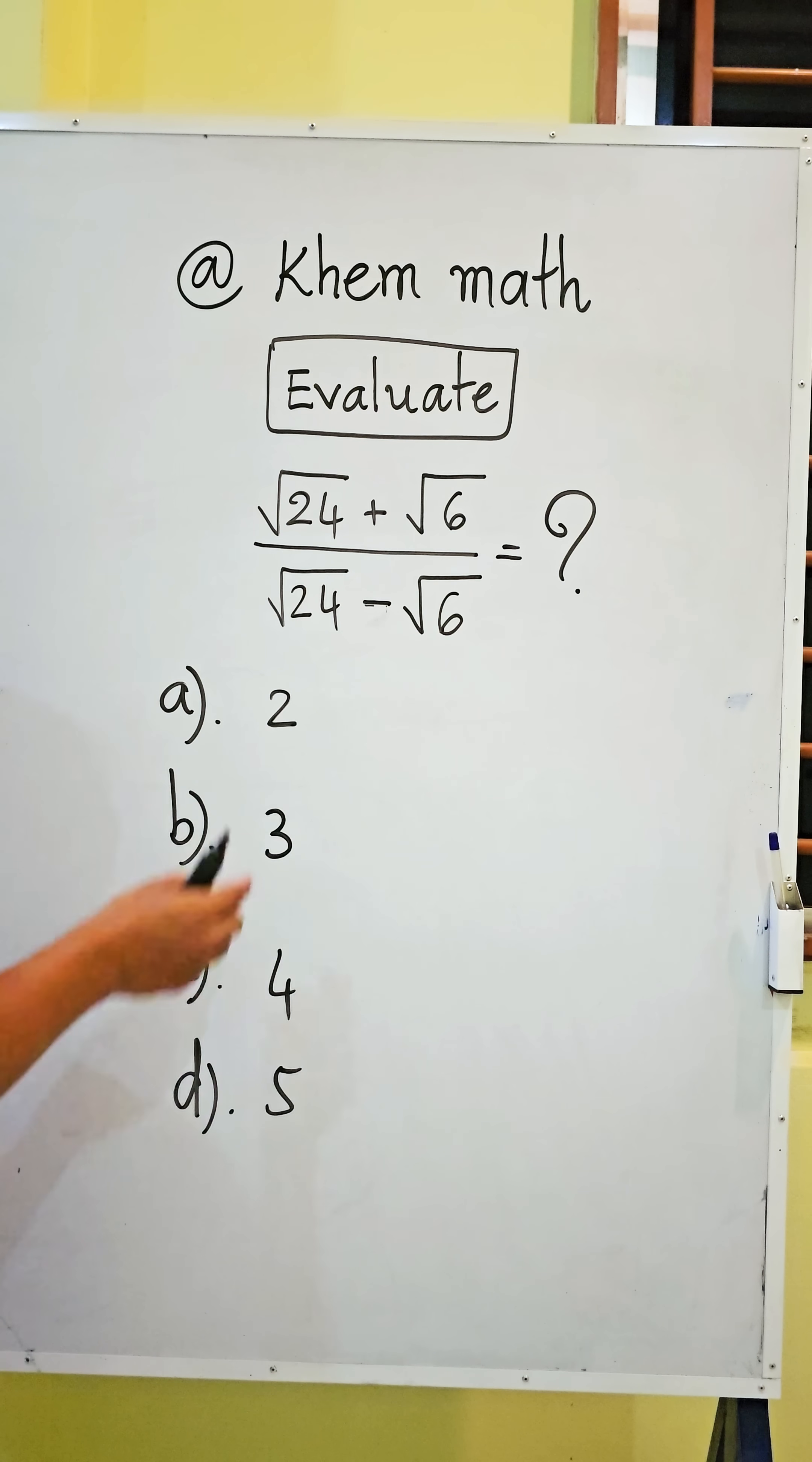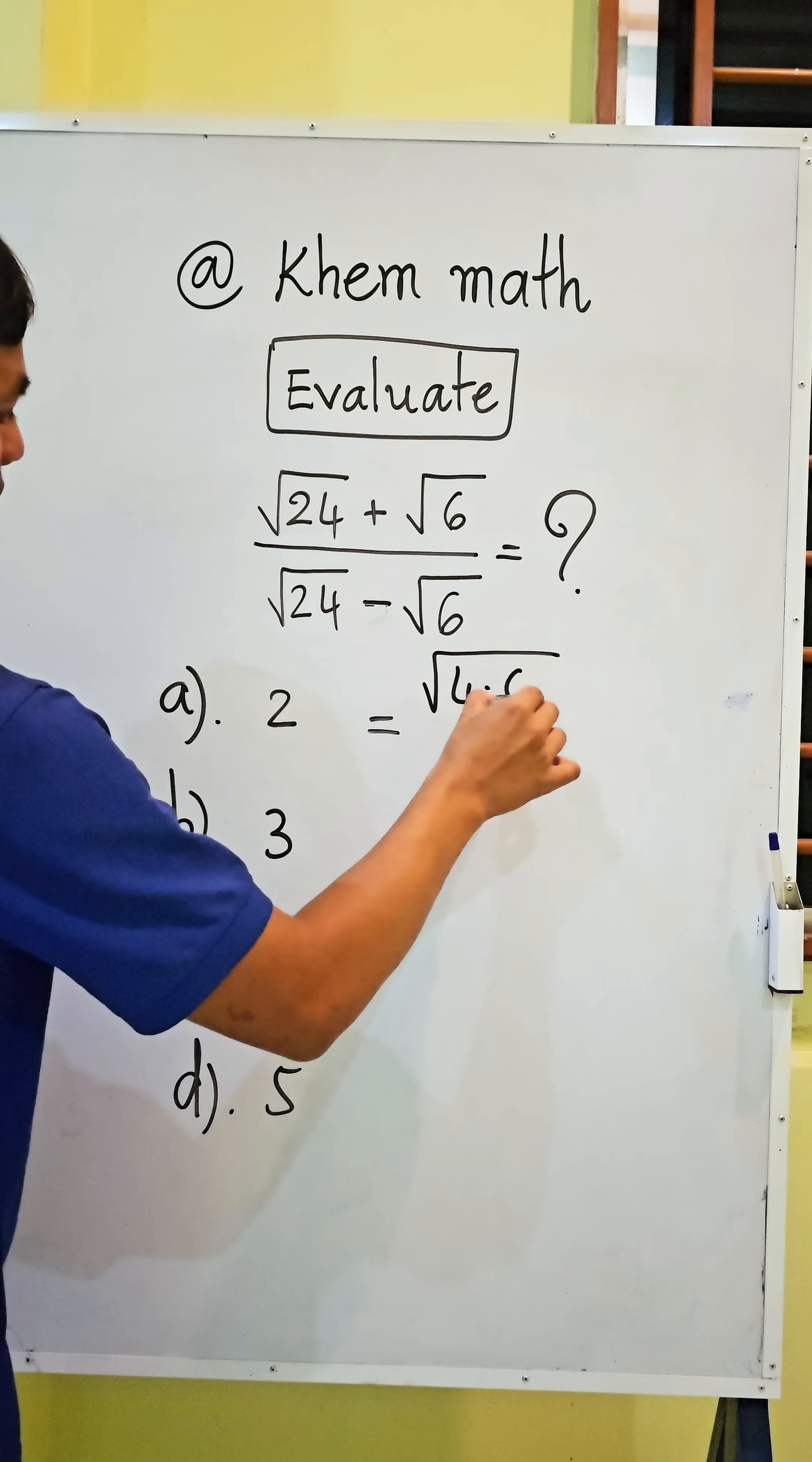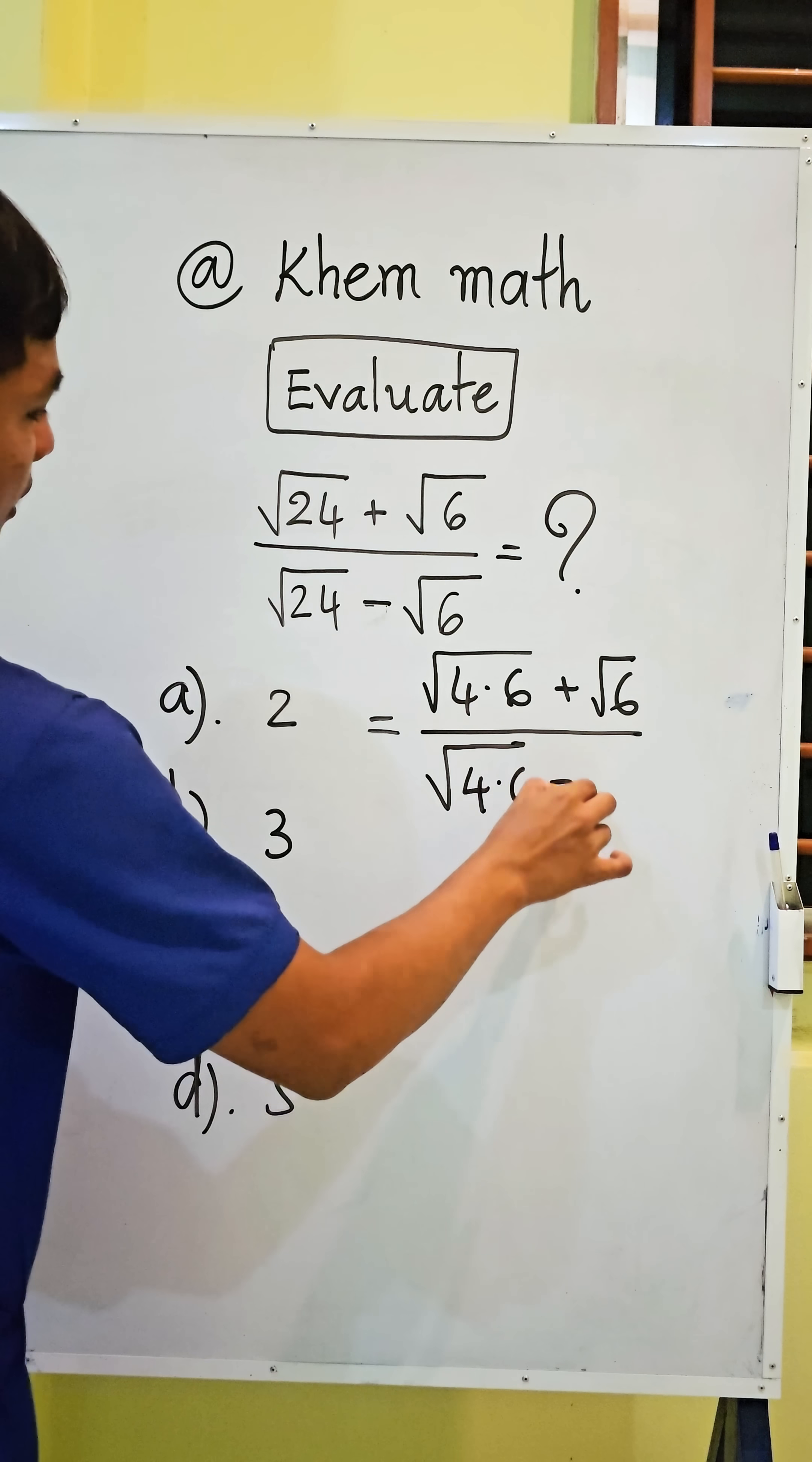Okay, now look here. Square root 24 can be written as square root 4 times 6 plus square root 6, and divide by square root 4 times 6 minus square root 6.